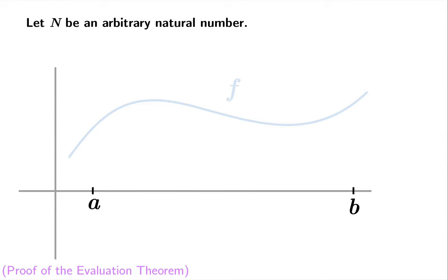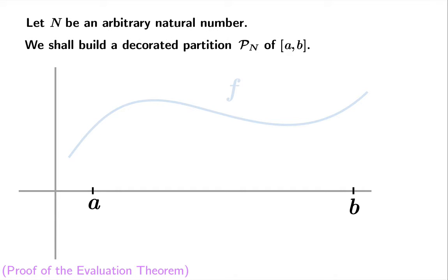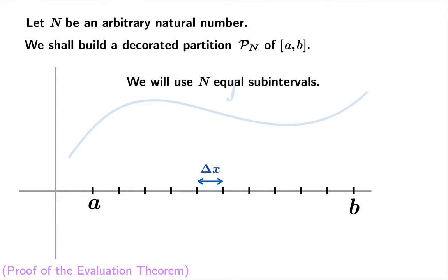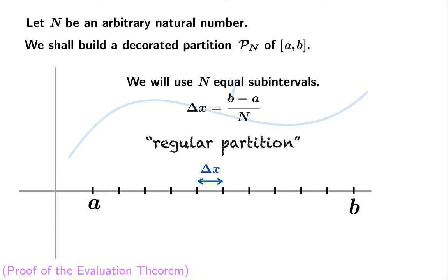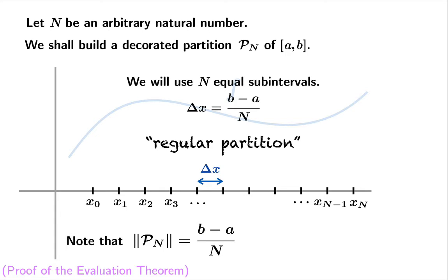Let n be an arbitrary natural number. We'll build a decorated partition of the closed interval using n equal sub-intervals. Let the common width of the sub-intervals be called Δx, so Δx equals the total width of the interval divided by the number of subdivisions. Such a partition is called a regular partition because all sub-intervals have the same size. We label the endpoints of the sub-intervals; the size of the partition is simply b minus a over n. Clearly when n goes to infinity the partition size goes to zero.